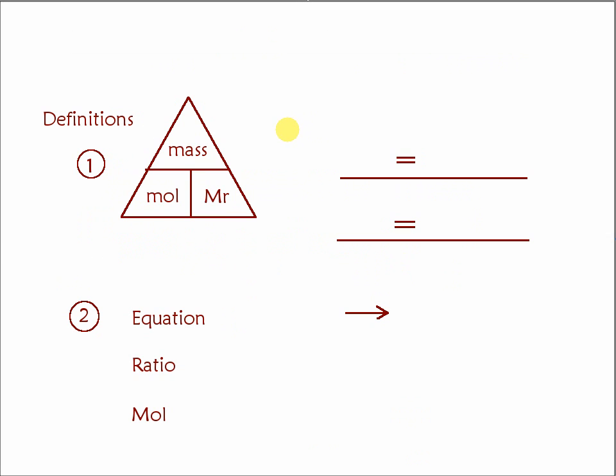So just to clarify how we can interconvert mass, mole and Mr we can put them in a triangle like this where we're saying that the amount in mole is equal to the mass divided by the relative mass of the compound.